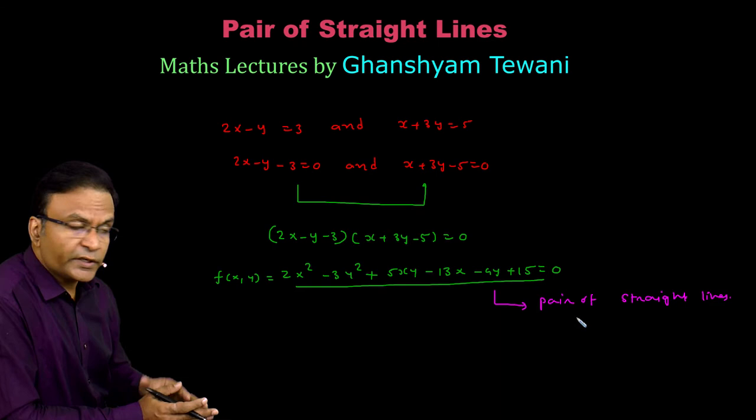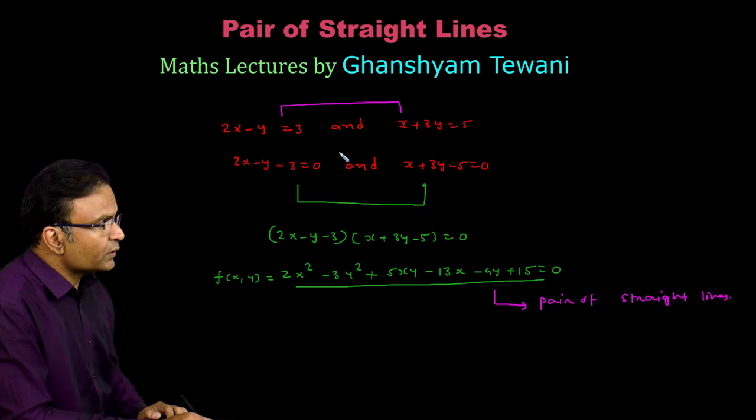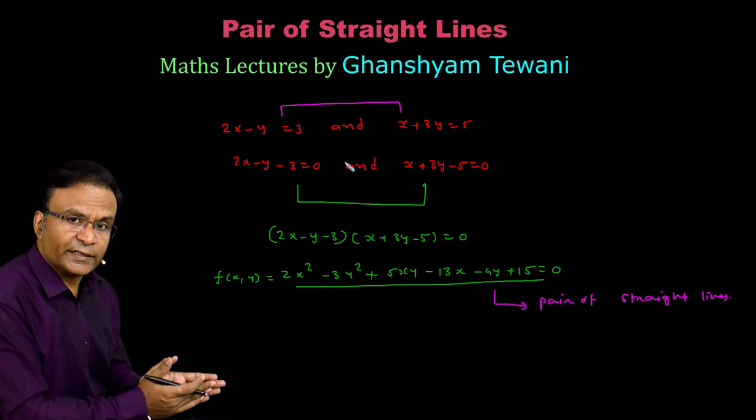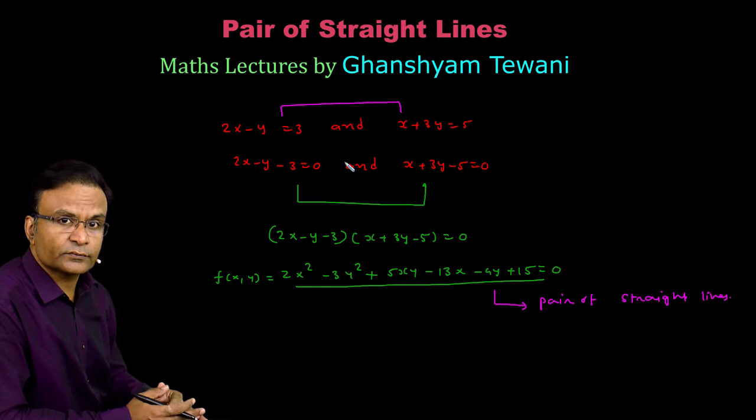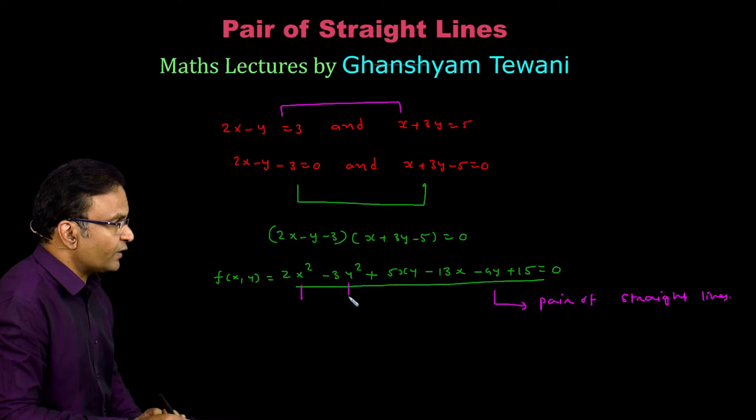Note how we multiply these two equations. We are multiplying them after taking all the terms to LHS, so we have to ensure that in both equations the RHS is always 0. Look at the terms in this equation: we have x square, y square, xy, then x, y and constant.